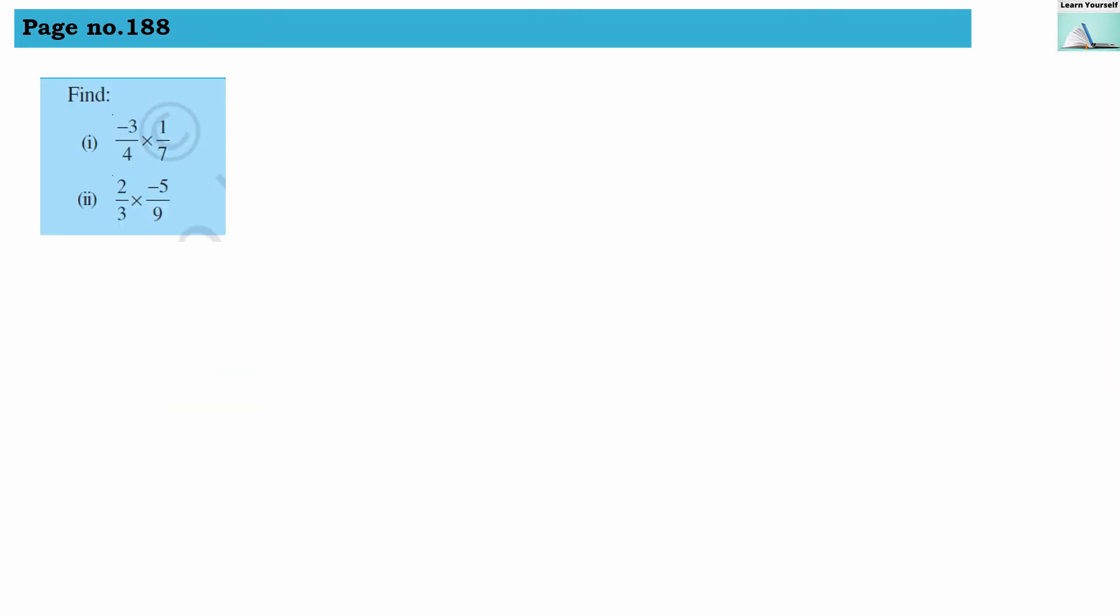Our second set of numerals. The first numerical is -3/4 in multiplication with 1/7. Let us reframe this as -3 × 1 ÷ (4 × 7). We will get -3 ÷ 28, and we cannot reduce anything here, so this is our answer.